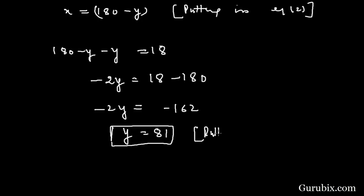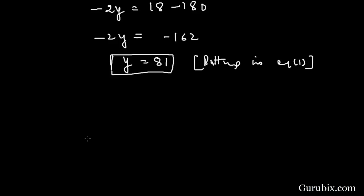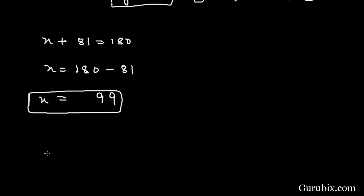Now we shall put this value in equation number one so that we can find the value of X. Equation number one is X plus Y, where Y is 81. X equals 180 minus 81. This means the value of X is 99 degrees.